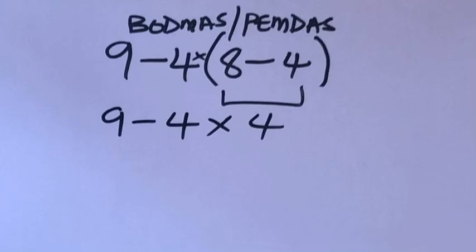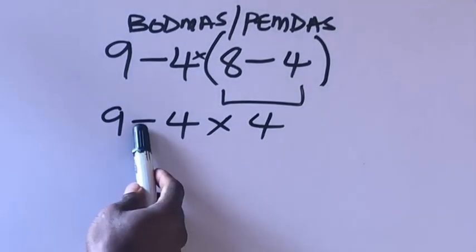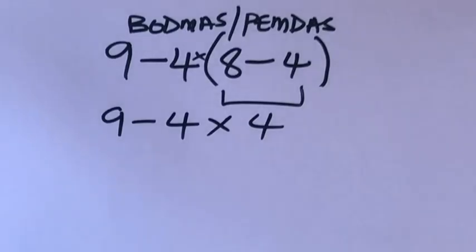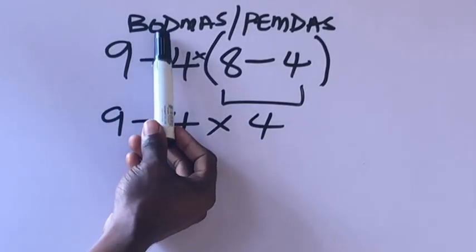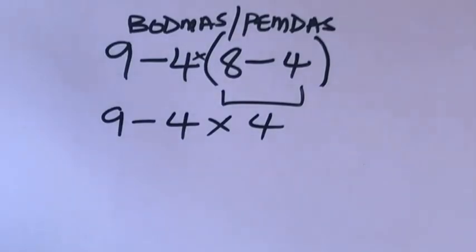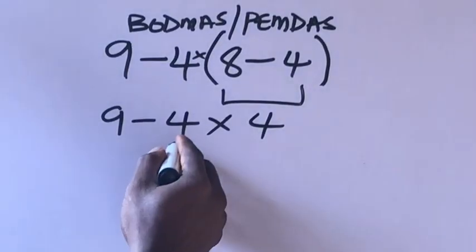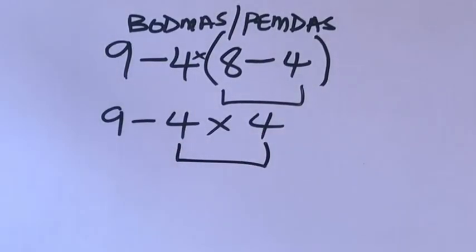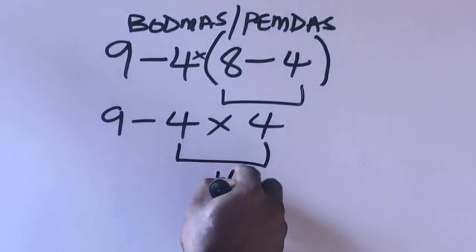Now we have two operations here: subtraction and multiplication. In our order of operation, multiplication comes before subtraction. So we have to multiply. 4 times 4 equals 16.